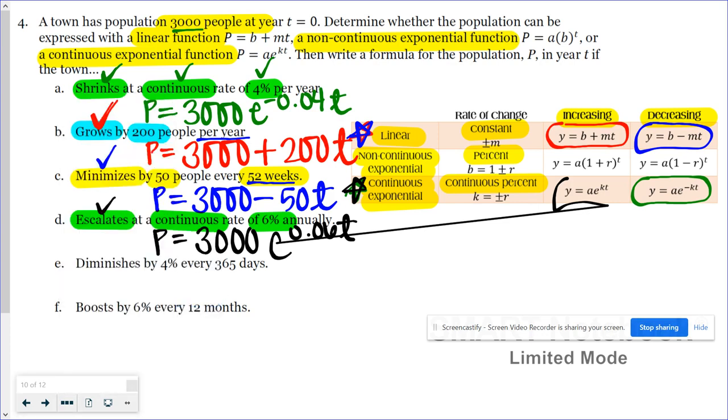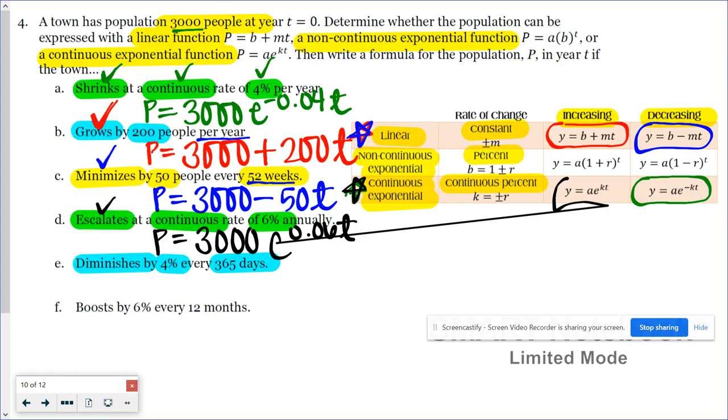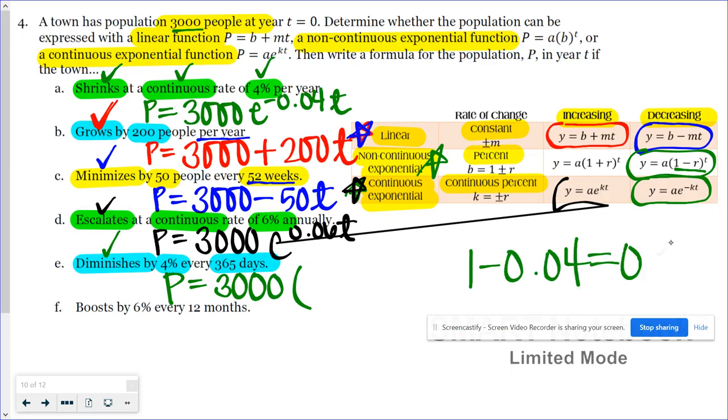Number E, if that makes any sense, diminishes by 4% every 365 days. That every 365 days, don't let that throw you off. That just means every year. Diminishing by 4%. That is definitely a non-continuous exponential function. Diminishing means it's decreasing. So we're going to have P is equal to 3,000. And then it's diminishing, so our base is equal to 1 minus r. I'm going to go 1 minus 0.04, and that's 0.96. So that's going to be the base of my function, 0.96 to the t power. I apologize for what's going on with my stylus here.